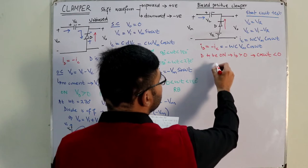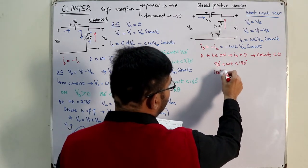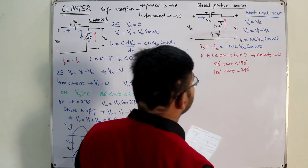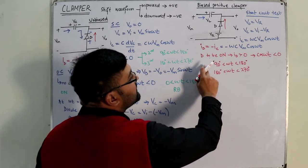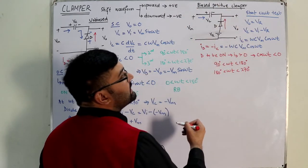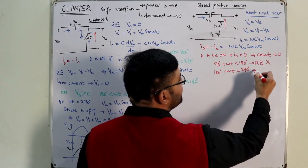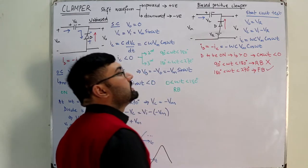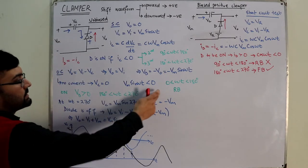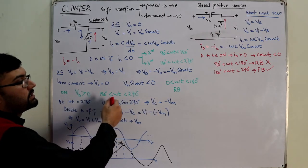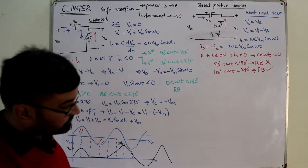However, the diode is reverse biased from 0° to 180° (the positive half cycle), so we do not consider the 90°–180° region. For the 180°–270° region, the diode is forward biased, so we consider that case. Where the diode is forward biased and where it is reverse biased can be seen from the positive and negative half cycles.